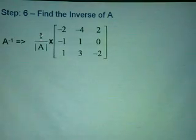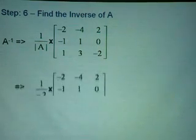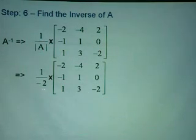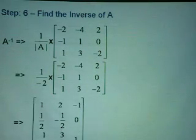So that is the adjoint of A. Step number six is to find the inverse of A using the formula: one over the determinant of A, times the adjoint of A. We found earlier that the determinant of A equals negative two. So therefore, we will take negative one over two times all the elements in the adjoint of A.